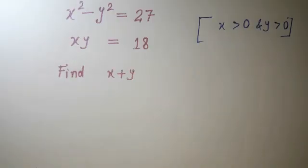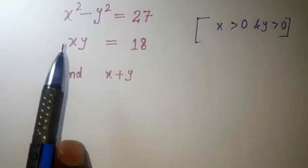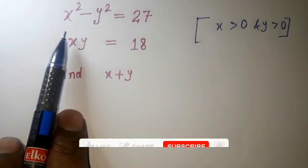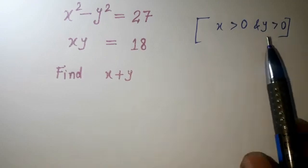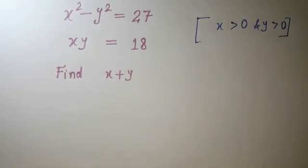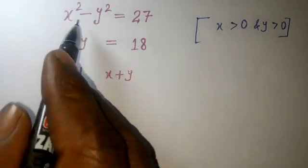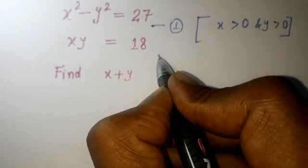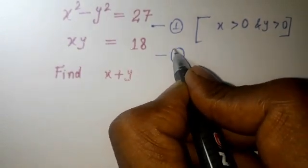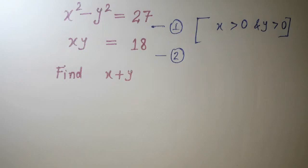Welcome back to Tuple X Learning. Today we have this question: x squared minus y squared equals 27, and xy equals 18. We need to find the value for x and y, where both x and y should be positive. We know this is our first equation and the second equation.